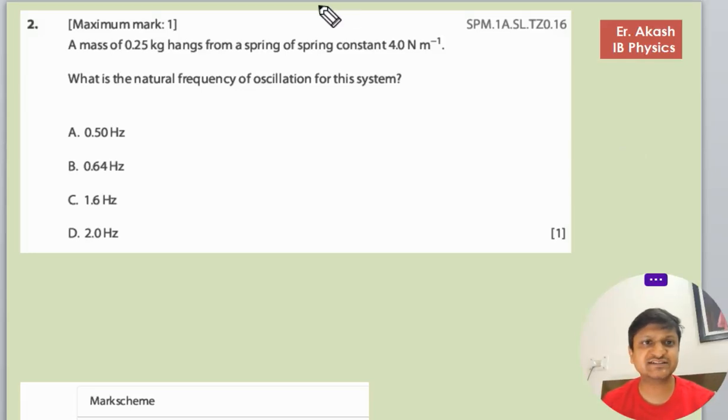There's another question that says a mass of 0.25 kg hangs from a spring of spring constant 4 newton per meter. What is the natural frequency of oscillation for this system?